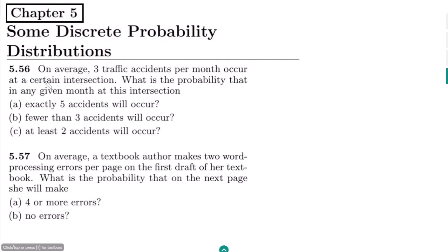In question 5.56, the statement is: on average, three traffic accidents per month occur at a certain intersection. What is the probability that in any given month at this intersection: (a) exactly five accidents will occur, (b) fewer than three accidents will occur, and (c) at least two accidents will occur.